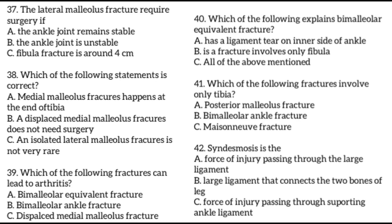Trimalleolar fracture involves both fibula and tibia, like a bimalleolar ankle fracture. However, the bone in the back of the tibia called the posterior malleolus is also fractured. At times, if a large fragment of bone is fractured, surgery is inevitable. Posterior malleolus fracture involves only the tibia and is a rare injury in isolation. Fractures of the posterior malleolus generally occur in association with bimalleolar ankle fractures — in such a case, the injury is called a trimalleolar ankle fracture.